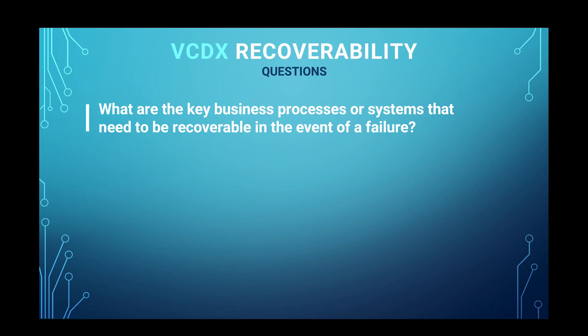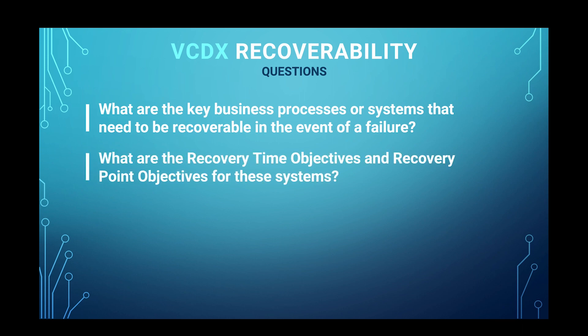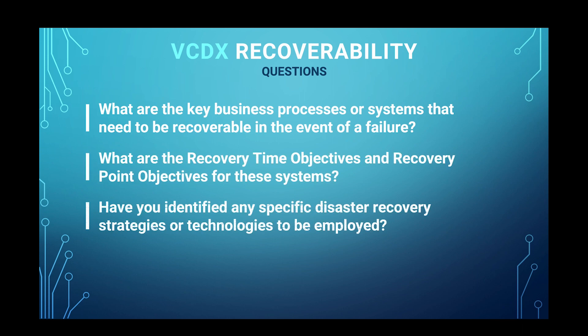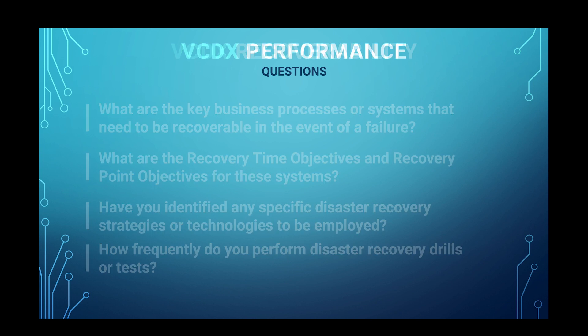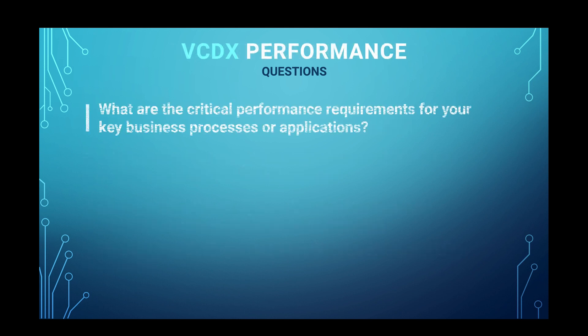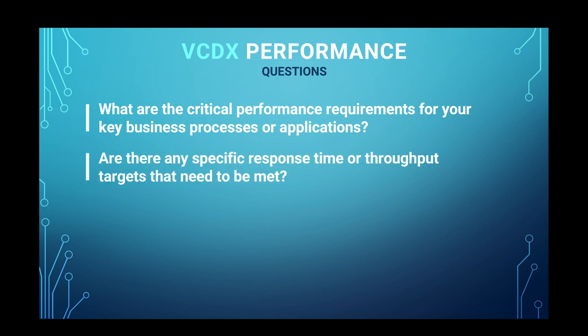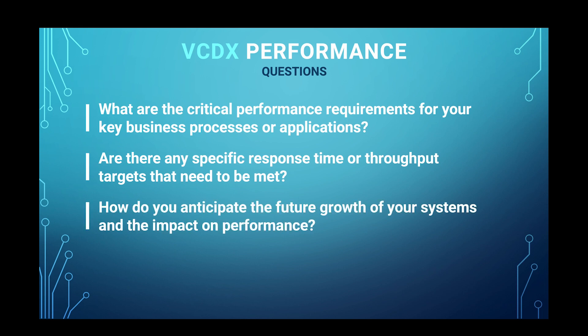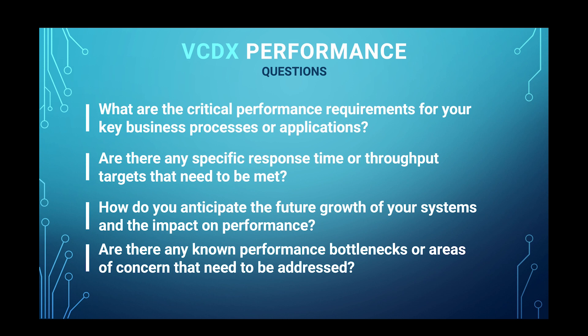From a recoverability perspective: What are the key business processes or systems that need to be recoverable in the event of a failure? What are the RTO and RPO objectives for these systems? And have you identified any specific disaster recovery strategies or technologies to be employed? From a performance perspective: What are the critical performance requirements for your key business processes or applications? Are there any specific response times or throughput targets that need to be met? And are there any known performance bottlenecks or areas of concern that need to be addressed?